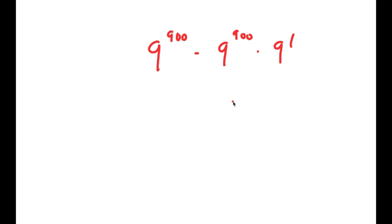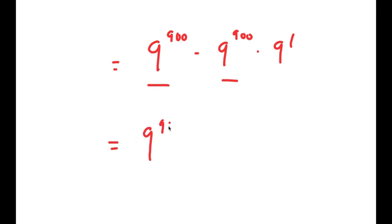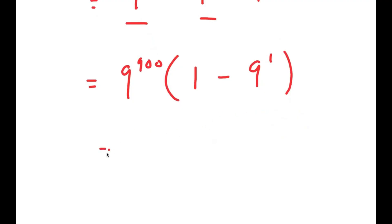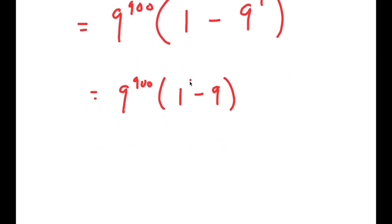Now these two terms both have 9^900 in them, so I'm going to factor out 9^900, which is what I said I was going to do at the beginning of the video. I get 9^900 times (1 minus 9^1), which equals 9^900 times (1 minus 9). Since 1 minus 9 equals negative 8, I get 9^900 times negative 8.